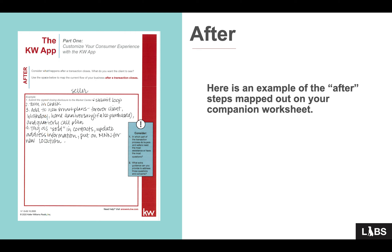Here's what I wrote down: submit the signed closing disclosure to the market center and submit loop, turn and check, add them to new smart plans — forever client, birthday, home anniversary if they also purchased with me, add a quarterly call plan so I can call them once a quarter, tag them as sold in contacts, update address information, and put on monthly neighborhood nurture for new location. When I look at this, it helps me realize that I do a lot of things they don't necessarily need to know about, but there are some things they do need to know about — you can set expectations.